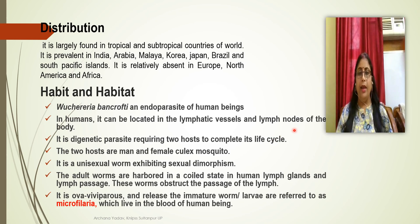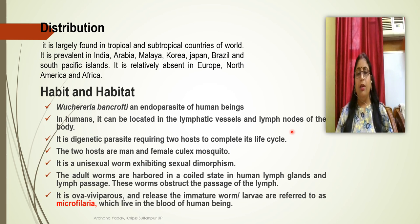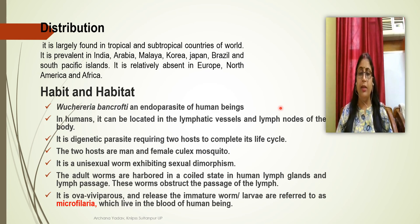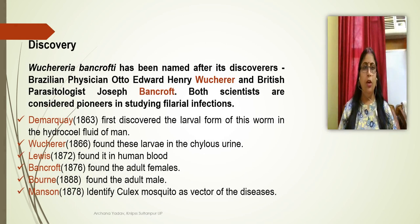The adult worms present in the human lymphatic glands or lymphatic vessels are found in a coiled form. They obstruct the passage of lymph. This parasite is viviparous or ovoviviparous and releases immature worms or larvae known as microfilariae, which are present in the blood of human beings.